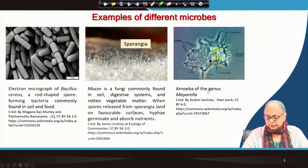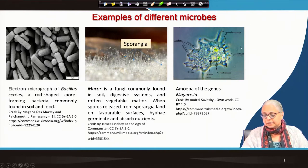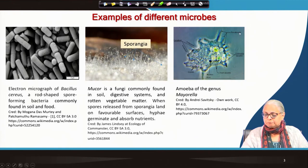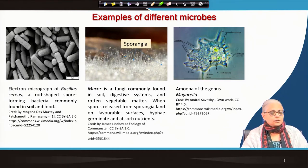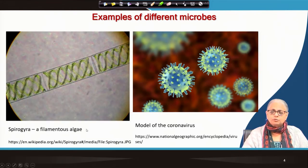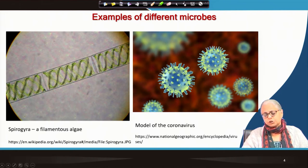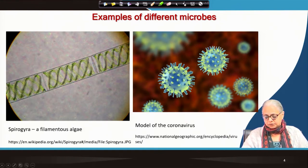Amoeba is something you are all most likely familiar with. It is a eukaryotic cell with an irregular shape. It has a clear cell wall as well as a nucleus. The cytoplasm has two parts — the ectoplasm and the endoplasm. The nucleus, food vacuoles, and pseudopods are also shown; the pseudopods allow the amoeba to move towards its food and ingest it. Here is an example of a filamentous algae, Spirogyra, and the next graphic shows a model of coronavirus — you can see the spikes on the capsid of the virus.